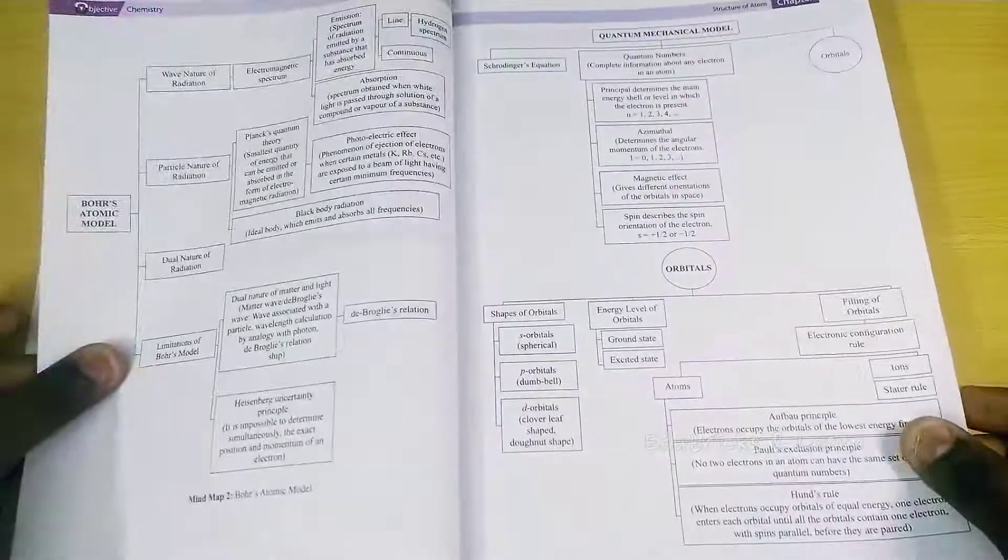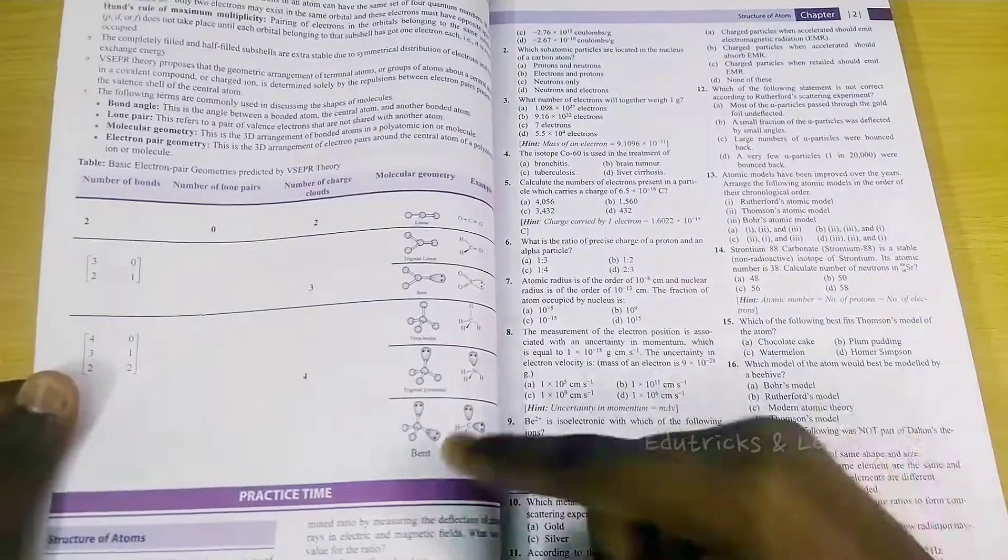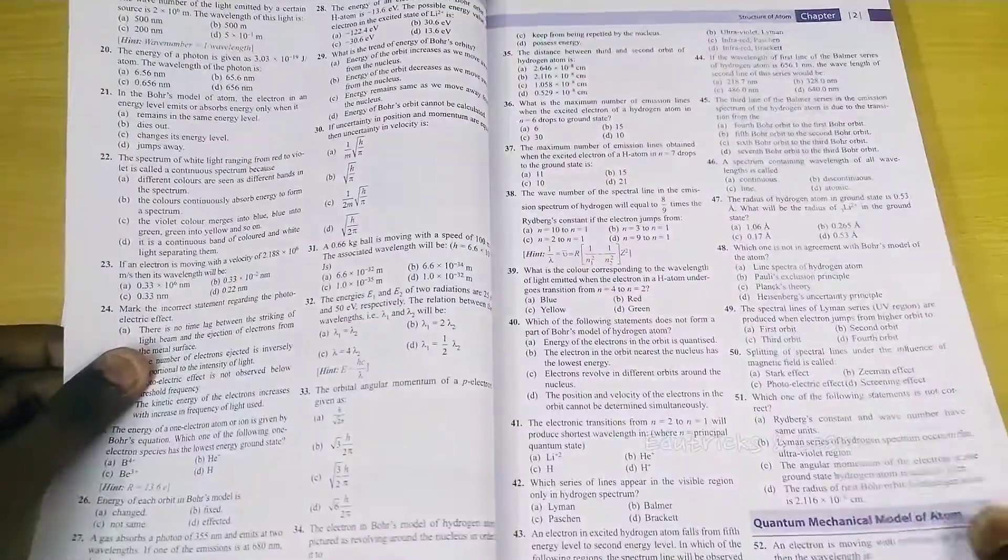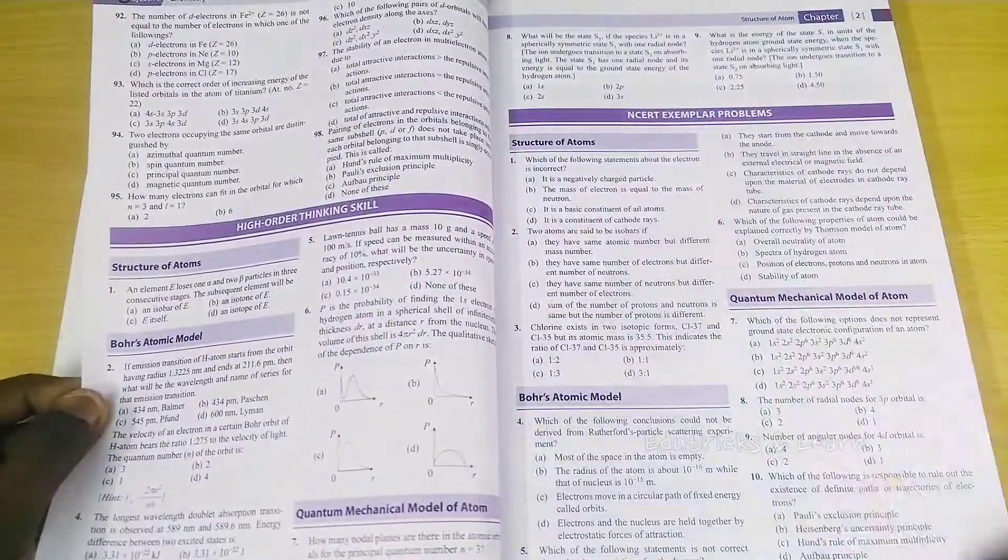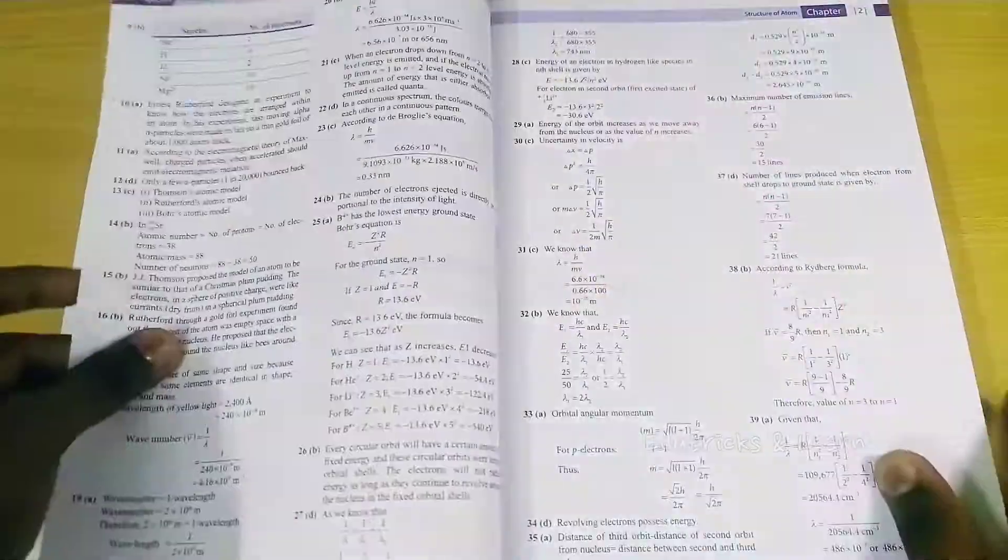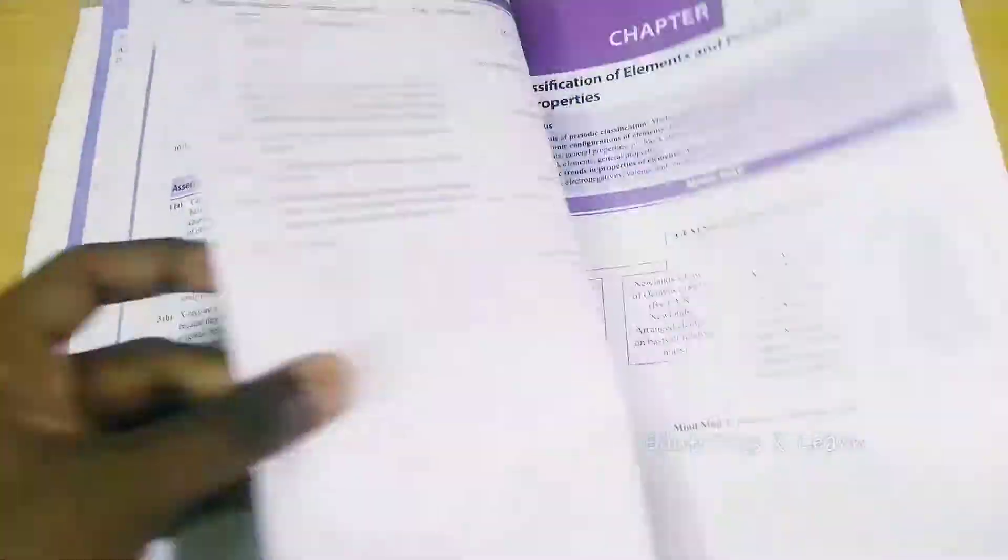For chapter 2, they've given the same structure: syllabus, mind map, recap which is notes, and practice time MCQs which are also topic-wise. They've given hints that show how to solve the question and give the idea. For some questions, they've given hints. They've given HOTS questions, NCERT examples, assertion and reason, everything, and every type of question topic-wise. This is the best thing.